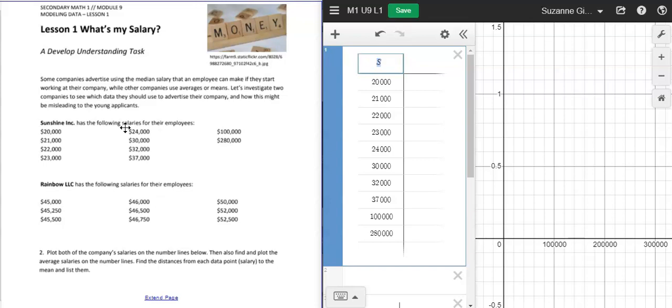With Lesson 1, there are two different companies and it lists the salaries for their employees. We have Sunshine Incorporated and Rainbow LLC, and they have the salaries listed. The first question asks us to plot both of the company's salaries on number lines that are below, written in the workbook task.